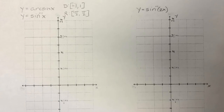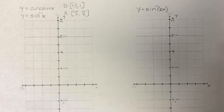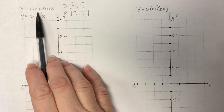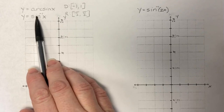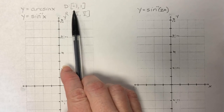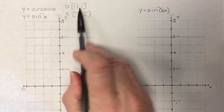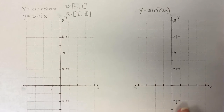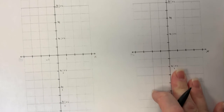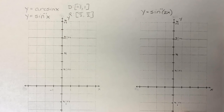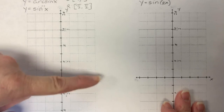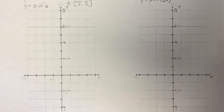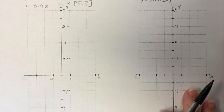Next we're going to go through graphing inverse sine, then inverse cosine and inverse tangent. First we'll do inverse sine — also called arcsine, written both ways, doesn't matter. This is the parent function. Your domain is going to go from negative 1 to 1. All I did was take our traditional graph paper and turn it on its side so I don't have to renumber anything. The radians will be my y-axis and the x-axis will be in numbers. If you want to do that for your assignment, you're welcome to.